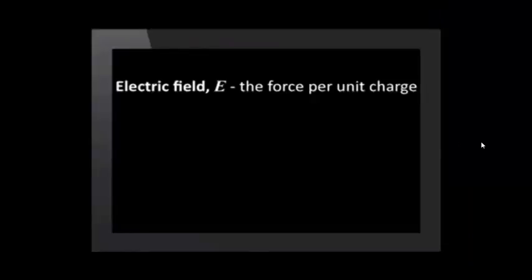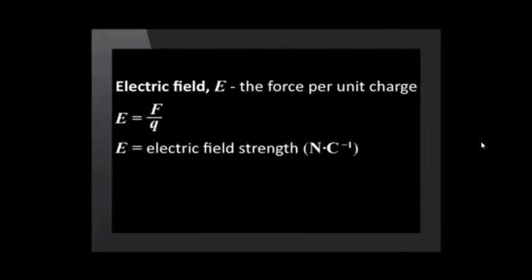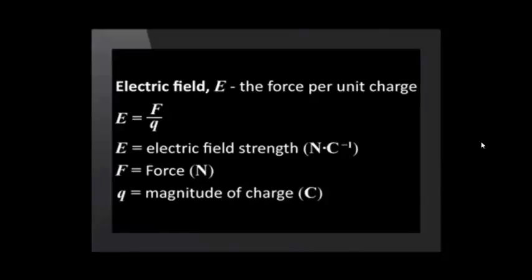Electric field strength depends on the magnitude of the charge and also on the distance from the charge. Electric field strength E is also called just electric field and is defined as the force per unit charge. E equals F over Q. The unit for electric field is newtons per coulomb. F is the force on the charge measured in newtons and Q is the magnitude of the charge in coulombs. Electric field is a vector quantity and therefore has magnitude and direction. The direction of the electric field at a specific point is the direction in which a positive test charge would move if placed at that point in the field.